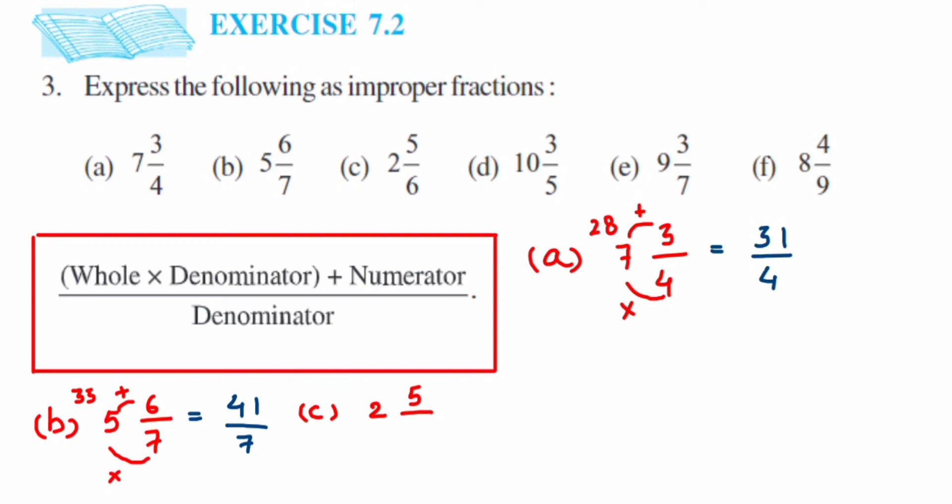Next we have 2 5/6. Multiply 2 and 6, which is 12. Now add 12 with 5, you will get 17. So this is equal to 17/6.